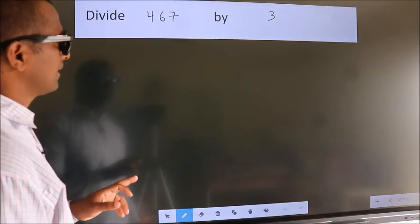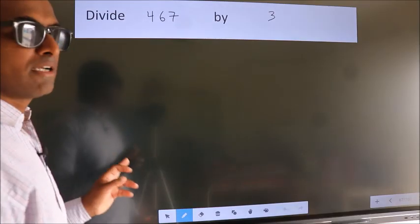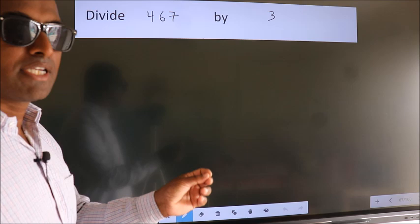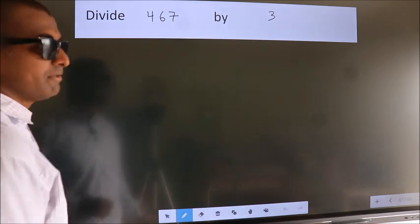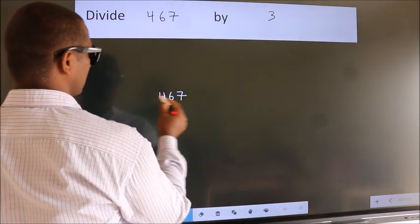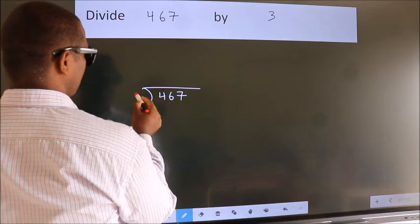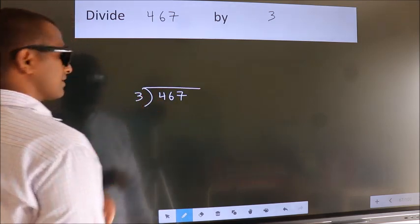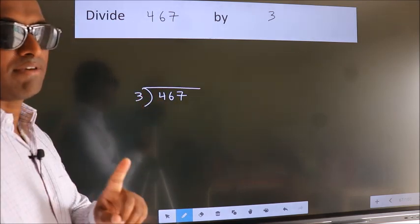Divide 467 by 3. To do this division, we should frame it in this way. 467 here, 3 here. This is your step 1.